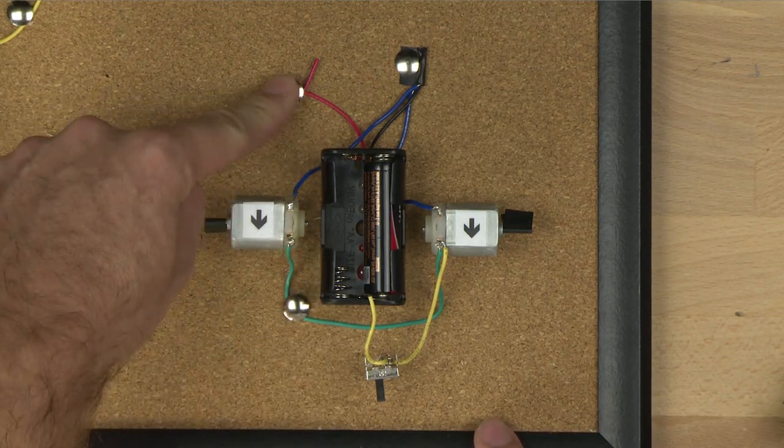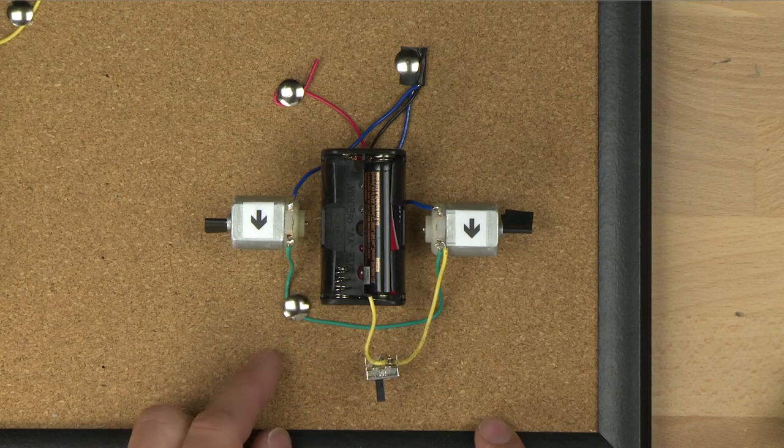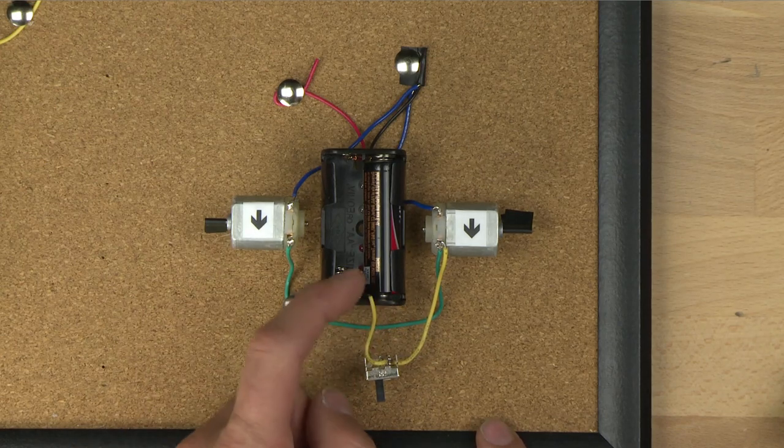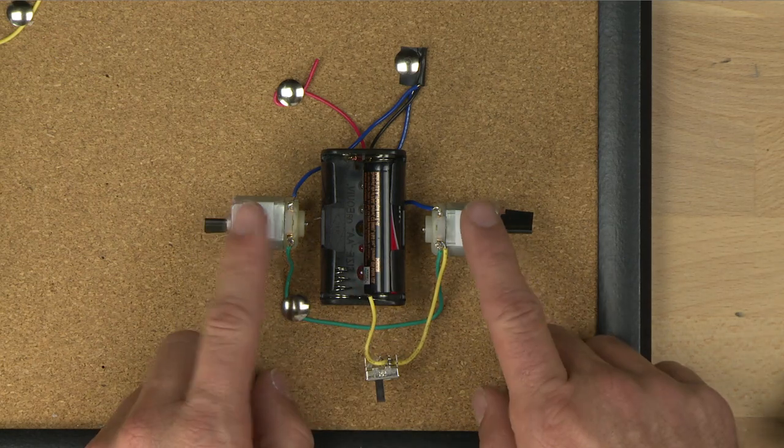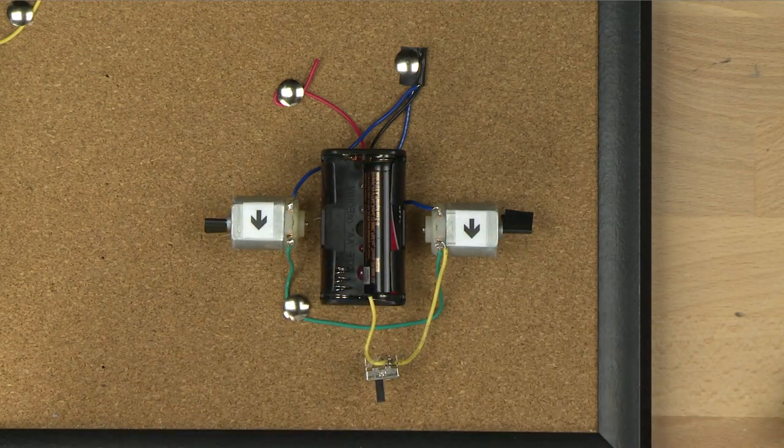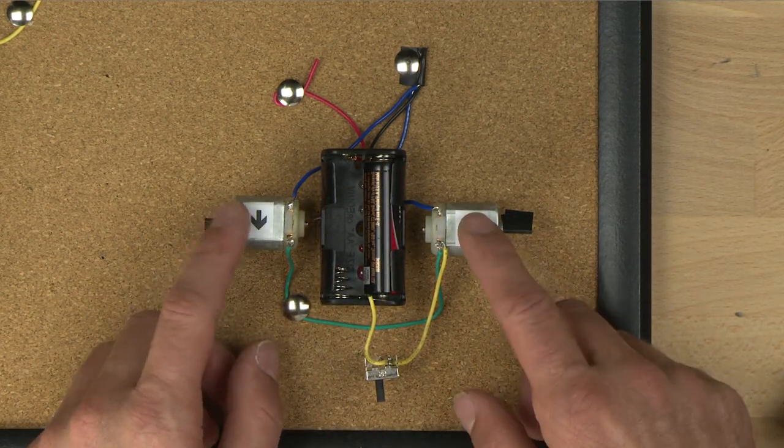Notice the positive wire here is tied off. We don't need the positive wire because we're using this yellow wire to connect to the batteries, and we just need this one battery to power these two motors because one battery is 1.5 volts, and that's enough to get the motors to turn.